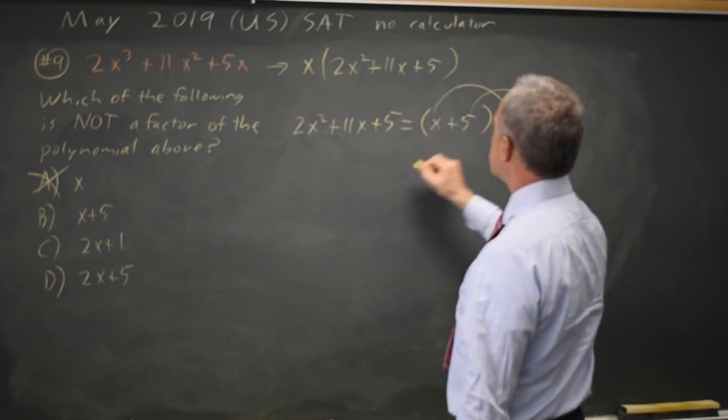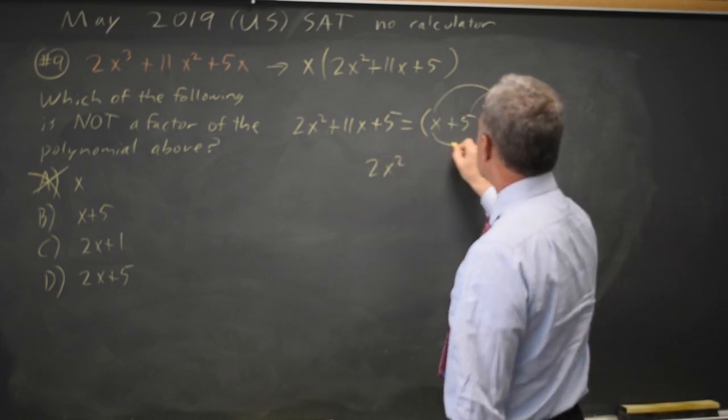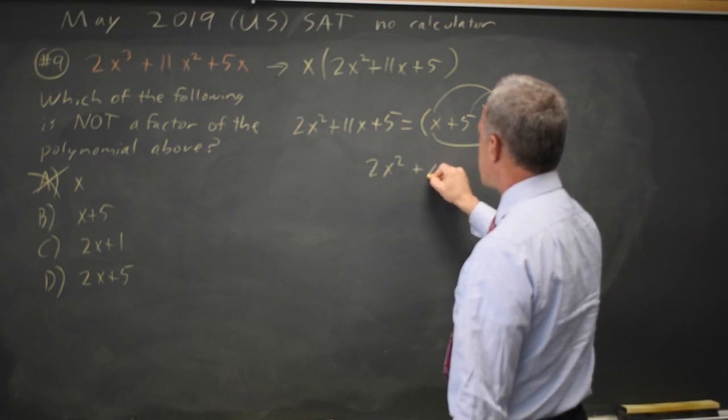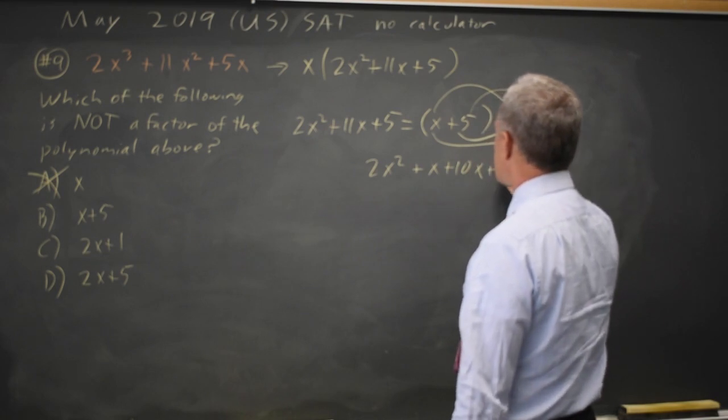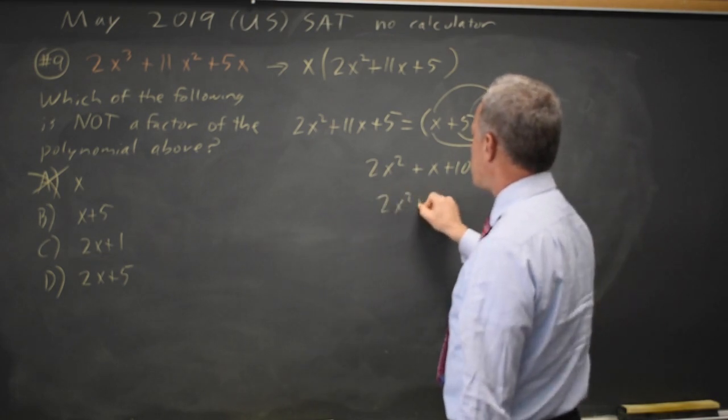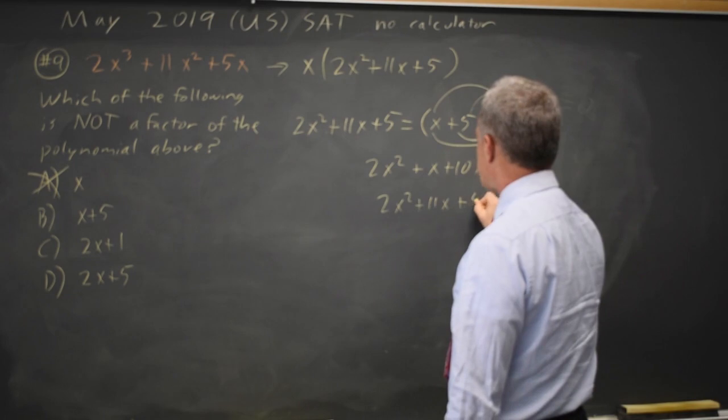So x times 2x is 2x squared, x times 1 is plus x, 5 times 2x is plus 10x, and 5 times 1 is plus 5, and that's 2x squared plus 11x plus 5, which is correct.